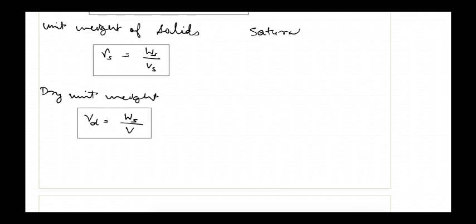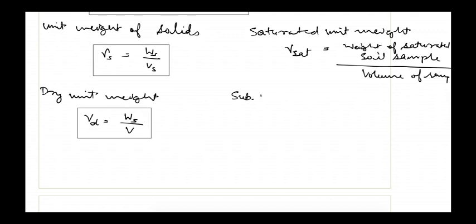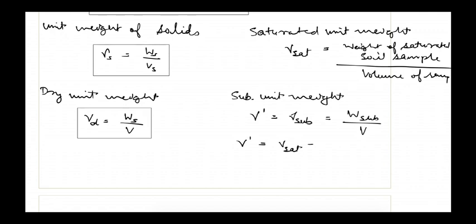After that is the saturated unit weight, denoted gamma sat, which is the weight of the saturated soil sample divided by the volume of the sample. Finally, the submerged unit weight, denoted gamma dash or gamma submerged, equals the submerged weight divided by the total volume. It can also be expressed as the saturated unit weight minus the unit weight of water.